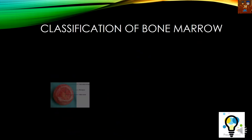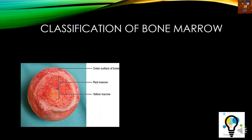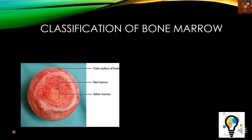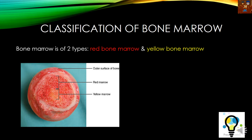Regarding the classification of the bone marrow, you can see in the figure that there are two parts of the bone marrow. Part one is the red bone marrow and the second one is the yellow bone marrow. This is the red bone marrow, as you can see, and this is the yellow bone marrow. We can classify the bone marrow into two parts: the red bone marrow and the yellow bone marrow.